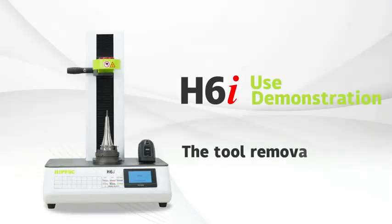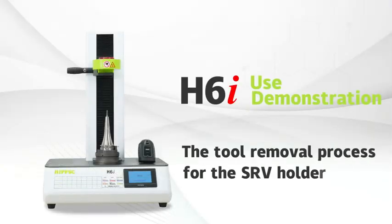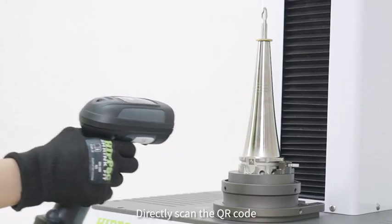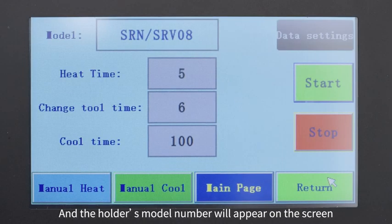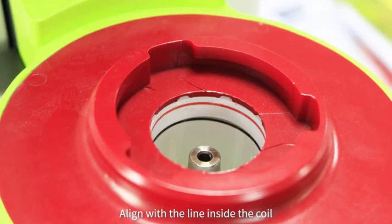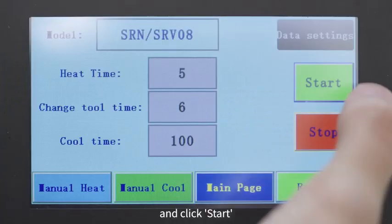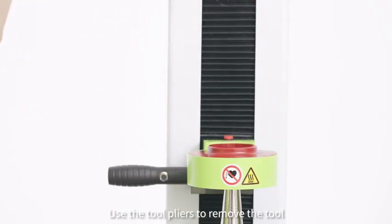Finally, let's demonstrate the tube removal process for the SRV holder. Directly scan the QR code and the holder's model number will appear on the screen. Lower the coil, align with the orange line inside the coil and click start. Use the tube pliers to remove the tube.